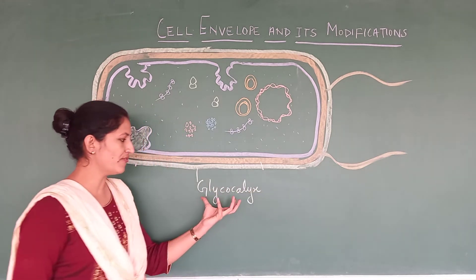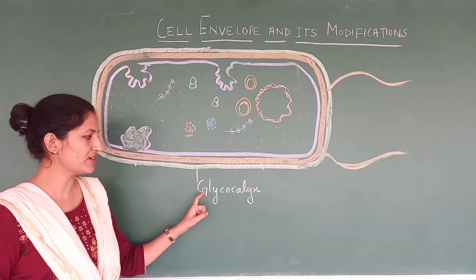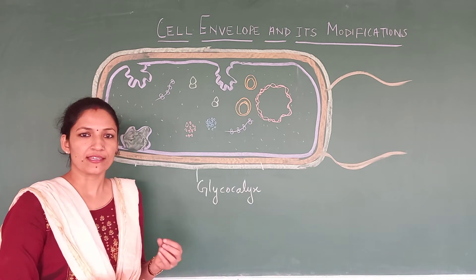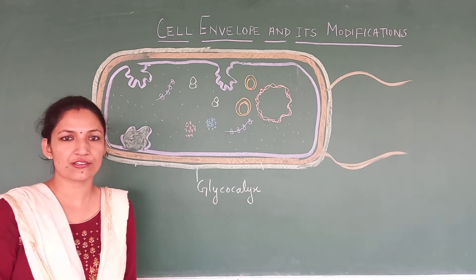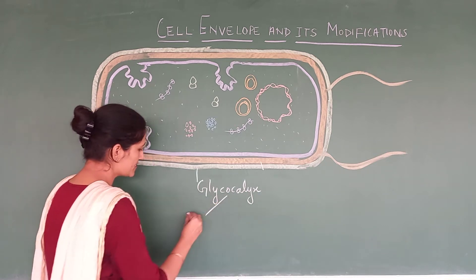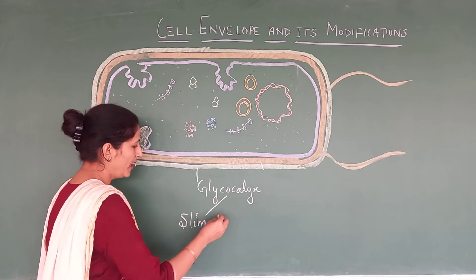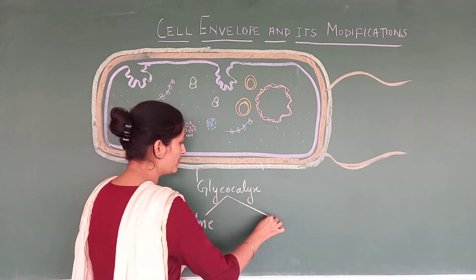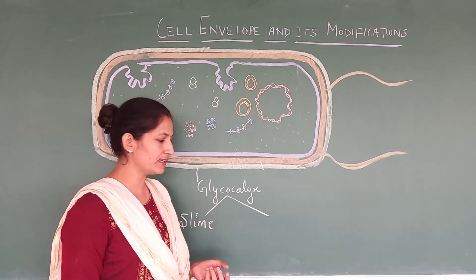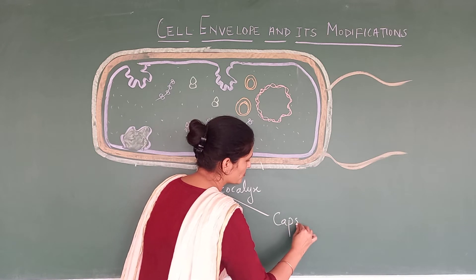Look at the covering which is made up of carbohydrate — glycocalyx. This glycocalyx, if it is soft and smooth, then it is termed as slime layer. And when it becomes hardened or solidified, then it will make a capsule.